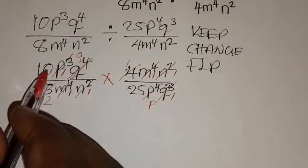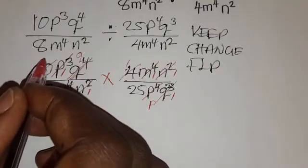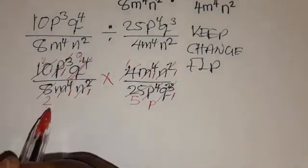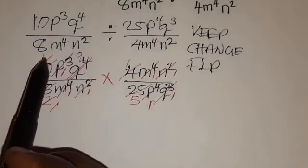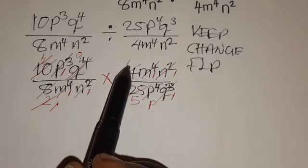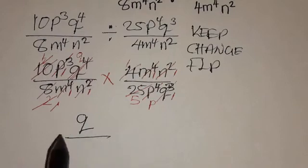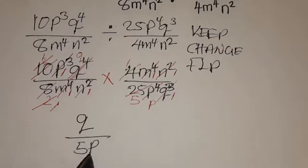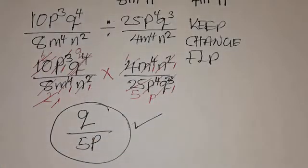There is a number that goes into both 10 and 25 without a remainder — it's 5. So 5 into 10 gives 2, and 5 into 25 gives 5. Then 2 into 2 is 1. So we are remaining with q over 1 times 1 times 1 times 5 times p, which is 5p.